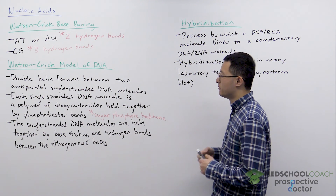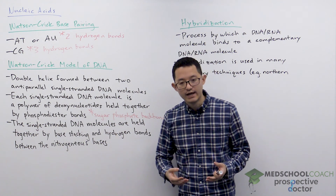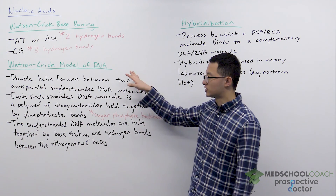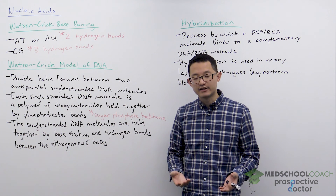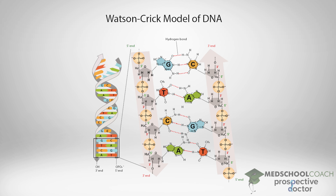Watson and Crick came up with a model for the structure of DNA. As you can see in this diagram, the model they came up with was a double helix formed between two antiparallel single-stranded DNA molecules. The double refers to the fact that it's two single-stranded molecules bound together, and you can see the helical shape of the Watson-Crick model. The two strands are antiparallel — one strand goes from the five prime to three prime direction whereas the other goes from three prime to five prime.